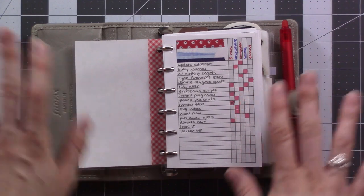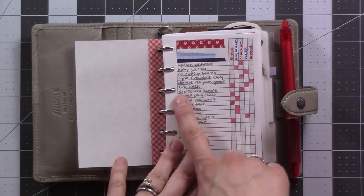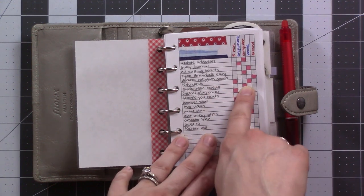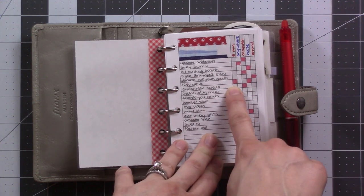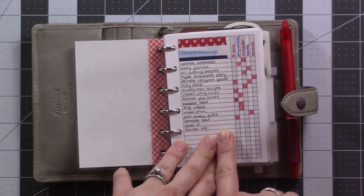So that does mean that some of my categories overlap a little bit. One of them here, tidy desk, it's a job that takes more than five minutes, but I should be able to do a little bit of it in five minutes. So I put it in both the five minutes and the house category.